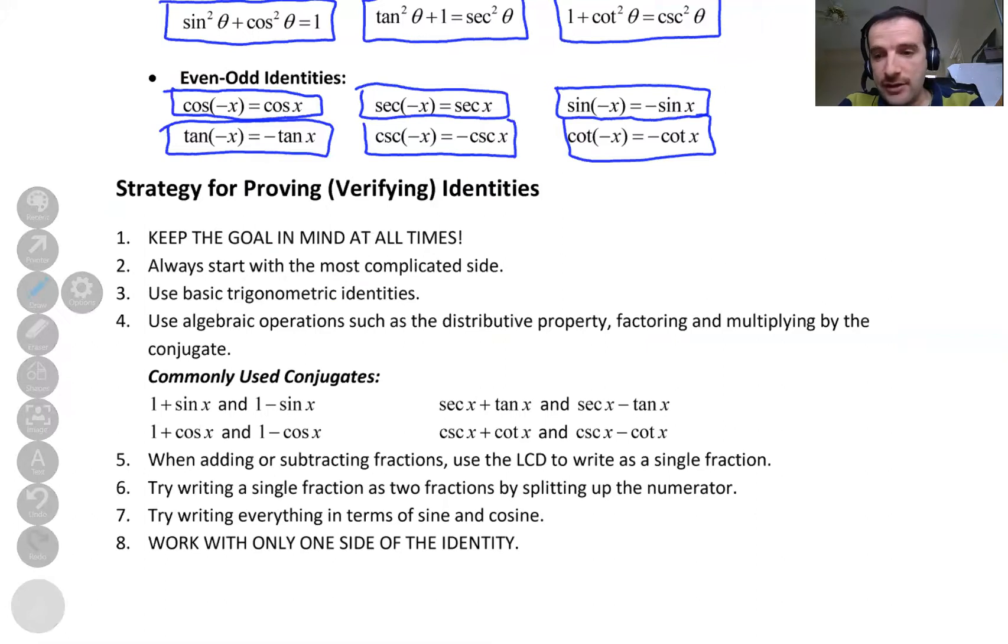And the commonly used conjugates are, if you see 1 plus sine, you can use 1 minus sine. If you see 1 plus cosine, 1 minus cosine. If you see secant plus tangent, you can use secant minus tangent, cosecant plus cotangent, cosecant minus cotangent.